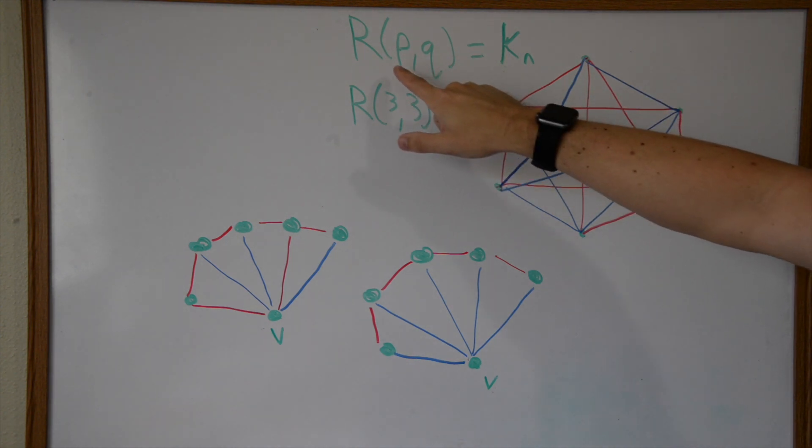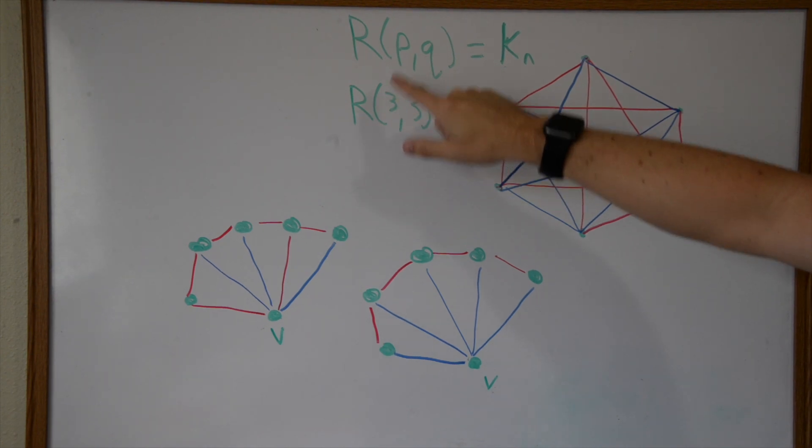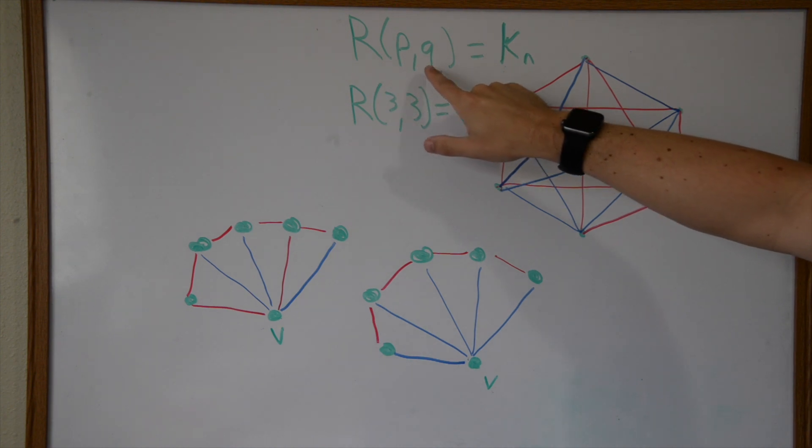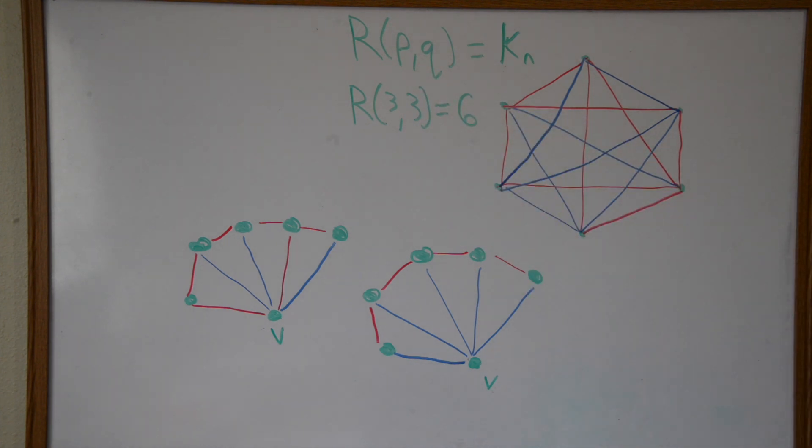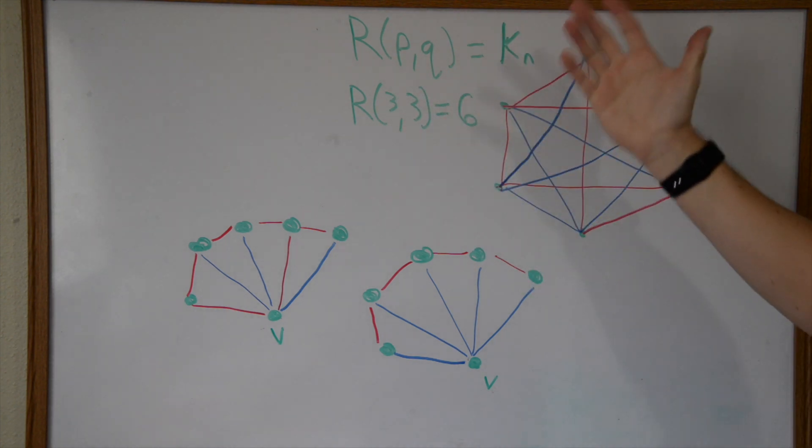It wants to satisfy either a complete blue subgraph on p vertices or a complete red subgraph on q vertices. In this case, a complete graph on three vertices is a triangle. We're talking about R(3) here.